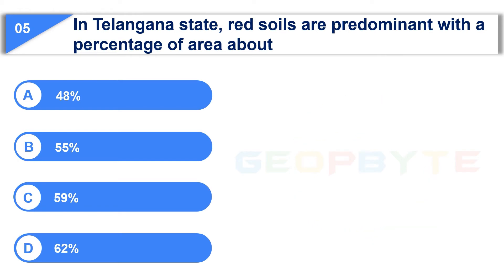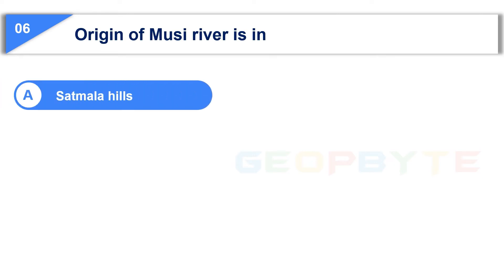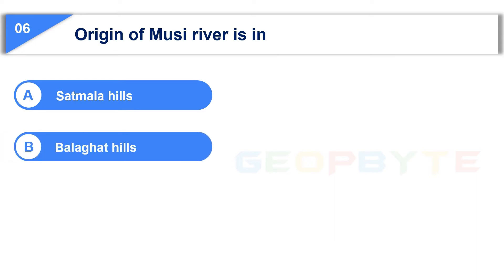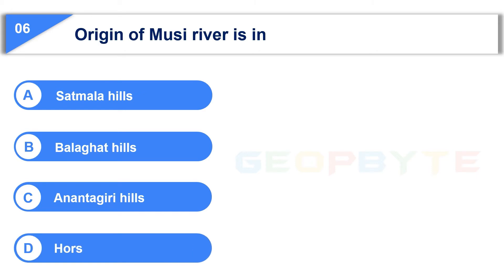Your time is up and the correct answer is Option A: 48%. Moving to the sixth question: Origin of Musi river is in — Option A: Satmala hills, Option B: Balaghat hills, Option C: Anantagiri hills, Option D: Horsley hills. Your time starts now.